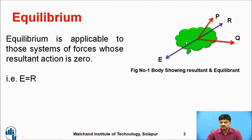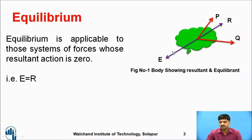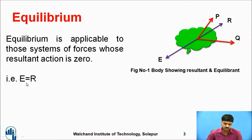Now the whole system — try to keep it in a rest position. For that we require one more force, and that force is your equilibrant. Resultant and equilibrant have exactly the same magnitude, opposite direction, and are collinear with each other. Equilibrium is applicable to those systems of forces whose resultant action is zero, that is why we say resultant R equals zero.